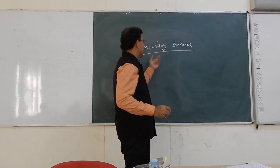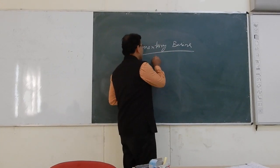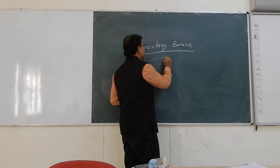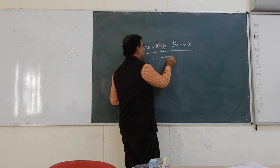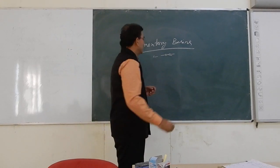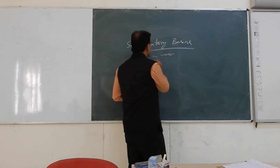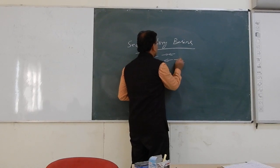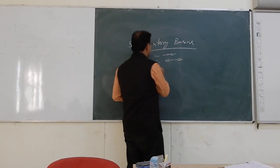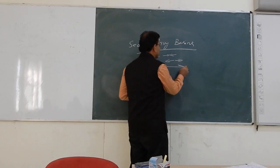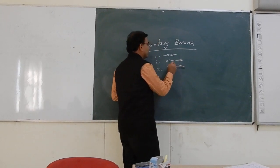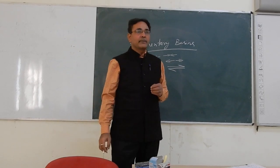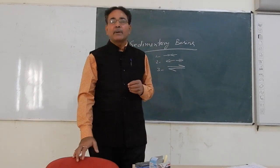There are three types of sedimentary basins. Number one, sedimentary basins formed by convergent plate movement. Then sedimentary basins formed by divergent plate movement. And then sedimentary basins formed by transform movement, which are side by side.